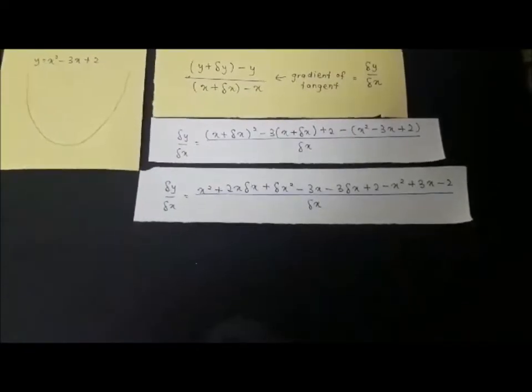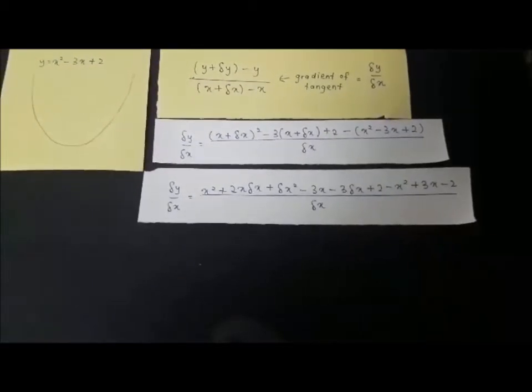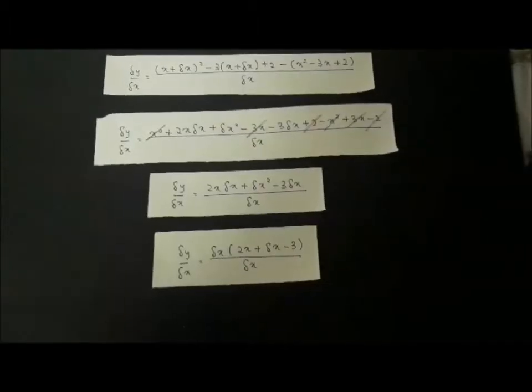After that, we need to expand and then simplify the equation. We will have 2x delta x plus delta x squared minus 3 delta x, all divided by delta x. Now we can factorize the delta x, and we will have delta y over delta x equal to 2x plus delta x minus 3.